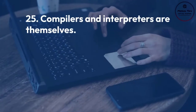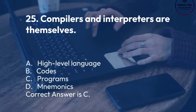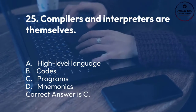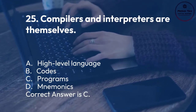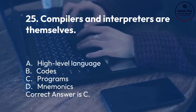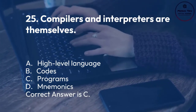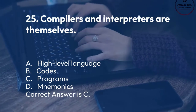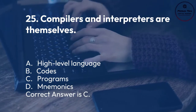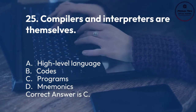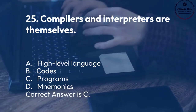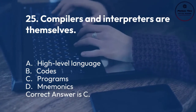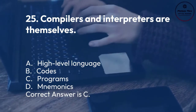Number 25. Compilers and interpreters are themselves: A. High-level language. B. Codes. C. Programs. D. Mnemonics. Correct answer is C.